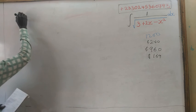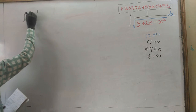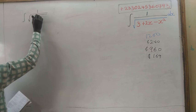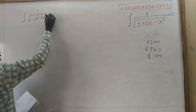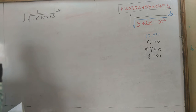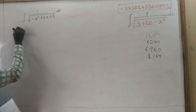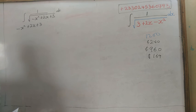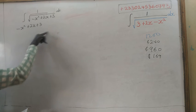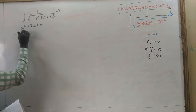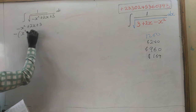We have the integral of 1 divided by the square root of minus x squared plus 2x plus 3, dx. We take the quadratic expression under the square root — minus x squared plus 2x plus 3 — and factorize using the method of completing the square. We factor out negative, leaving x squared minus 2x minus 3.